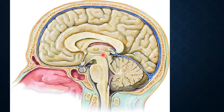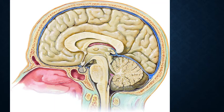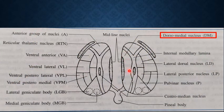That covers the stria terminalis. The other output of the amygdala is the ventral amygdalofugal fibers, which form a prominent trunk and project directly to the anterior perforated substance. They also terminate in the septal area just below the hypothalamic sulcus, and some fibers terminate in the dorsomedial nucleus of the thalamus.